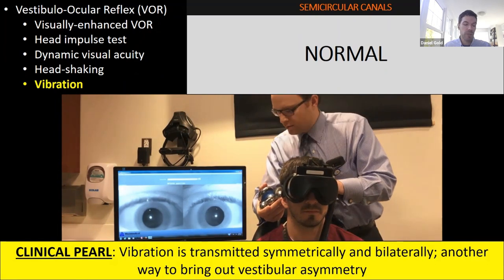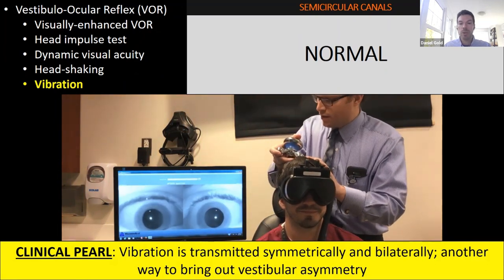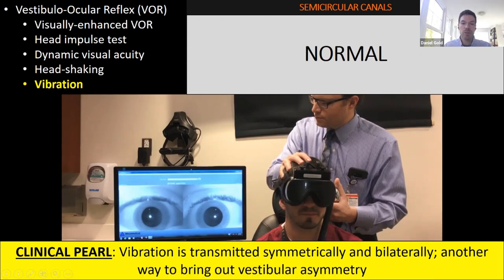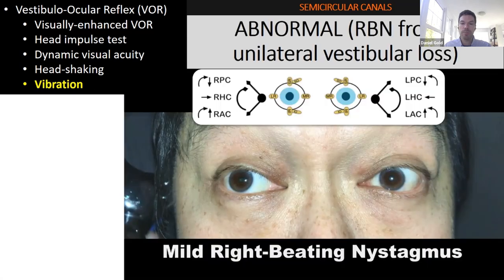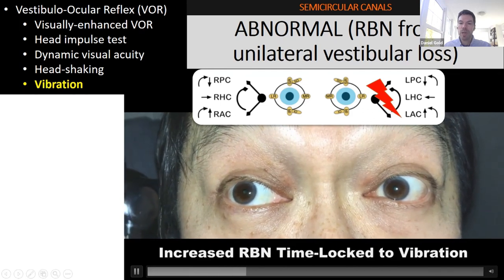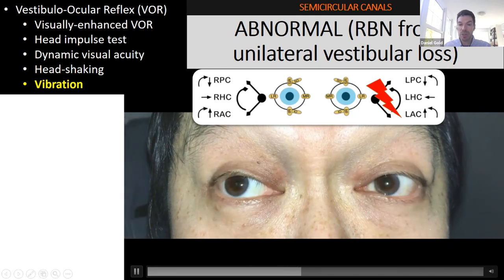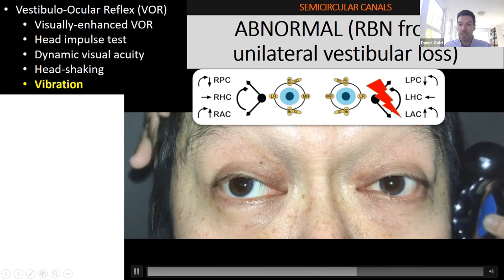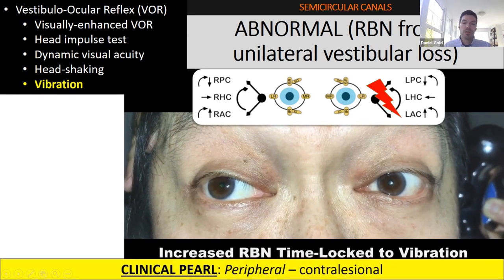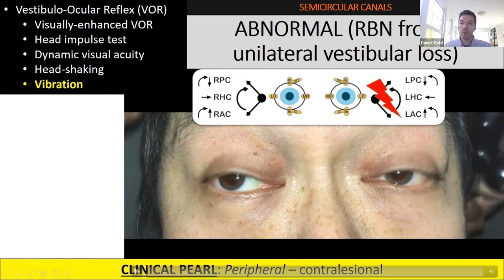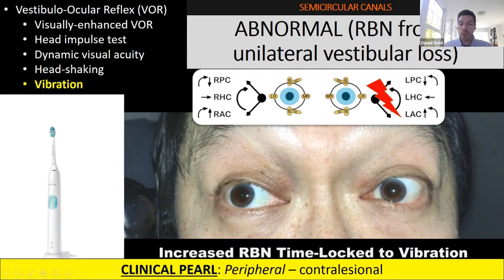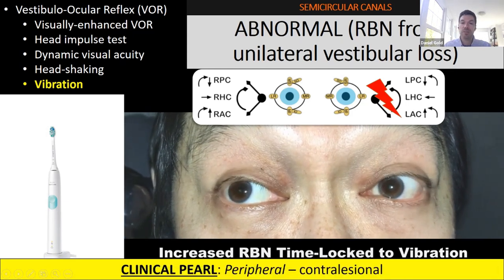Vibration is transmitted symmetrically and bilaterally — another nice way to bring out vestibular asymmetry. You can vibrate the right mastoid, the vertex, or the left mastoid. A normal vestibular system shows no vibration-induced nystagmus. This patient had a left vestibular neuritis just a couple days ago, and the right-beating nystagmus is really time-locked to the vibration — turn it off, it's gone; apply it again, it returns. It's contralesional — slow phase toward the paretic ear. In the virtual world, an electric toothbrush can substitute for a vibration device.